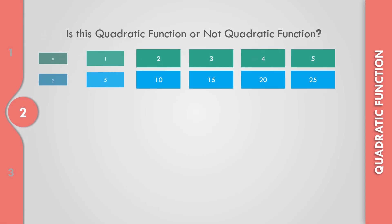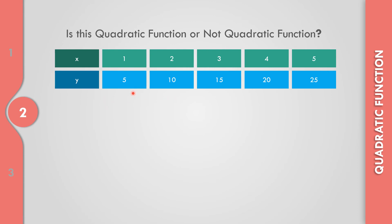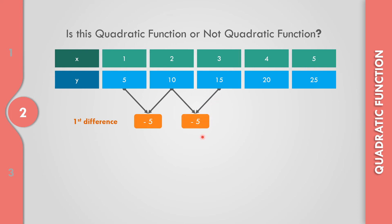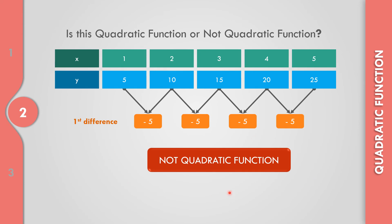How about example number 2? Let us get the first difference by subtracting from left to right: 5 minus 10 is negative 5; 10 minus 15 is negative 5; 15 minus 20 is negative 5; 20 minus 25 is negative 5. The first differences are already equal, so this is not a quadratic function. The rule requires the second difference to be equal — here only the first difference is equal, so this is not a quadratic function.